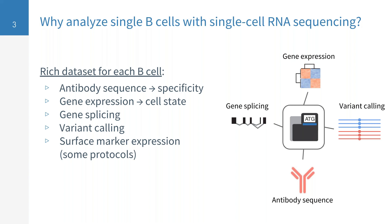Single cell RNA-seq is able to provide a really rich dataset for each B cell. Not only do you get the antibody sequence, which gives you specificity and affinity after cloning and recombinant expression, but you also get a lot of information about the cells themselves. You're able to couple information about the cells with specificity via the antibody. For example, with gene expression, you get information like cellular phenotype and cell state — whether the B cell is a plasmablast, a plasma cell, a memory B cell, a naive B cell, or whether it's in an activated state.